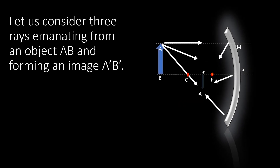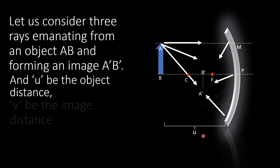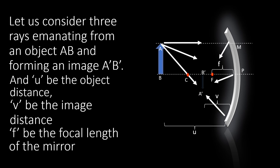Mirror equation derivation. Let us consider a spherical mirror. We have an object AB, and the image A'B'. The object distance is u, the image distance is v, and the focal length is f.